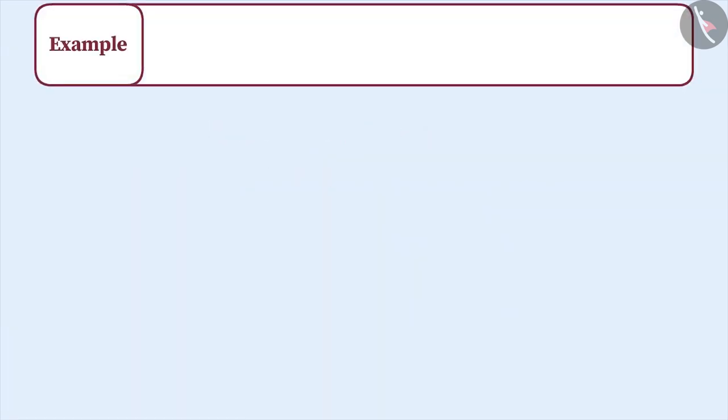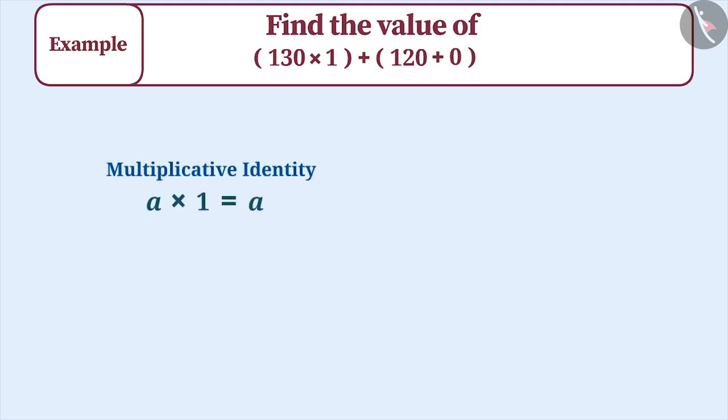Next example, find the value of 130 multiplied by 1 plus 120 plus 0. To solve this, we definitely need to understand the multiplicative identity and the additive identity.